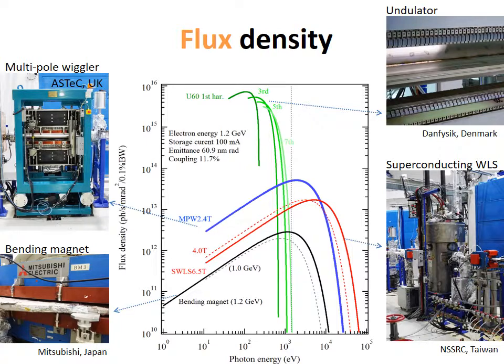The flux density of each magnet is displayed in this slide. The bending magnets show a maximum flux at 1.4 keV, which tells us that our ring is optimized for soft X-ray applications. Even higher energy can be produced in the superconducting magnet and multipole wigglers. Higher flux, shown in the green curve below 100 eV, is from the undulator.